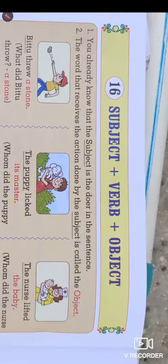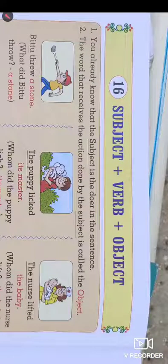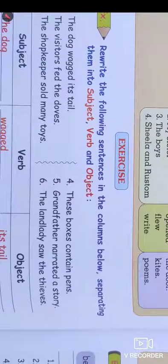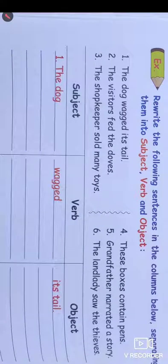These are some examples of the sentence pattern Subject + Verb + Object. We basically use this type of sentence in day-to-day life, so it is important in our life. Here are some sentences from which we have to select the subject, verb, and object. 'The dog wags its tail' — the dog is the subject, wags is the verb, and its tail is the object.